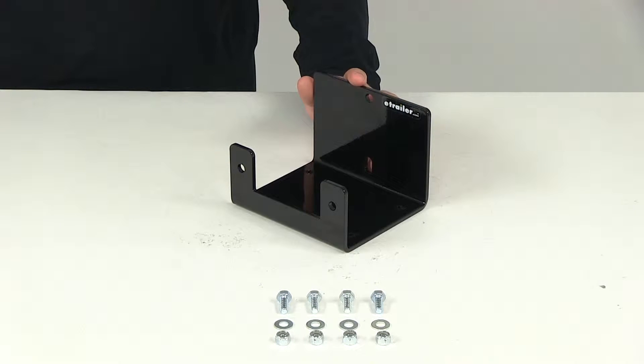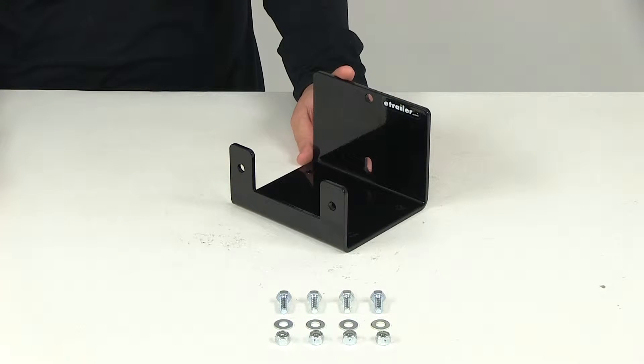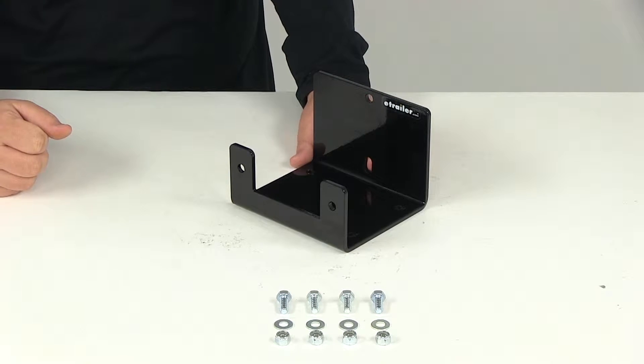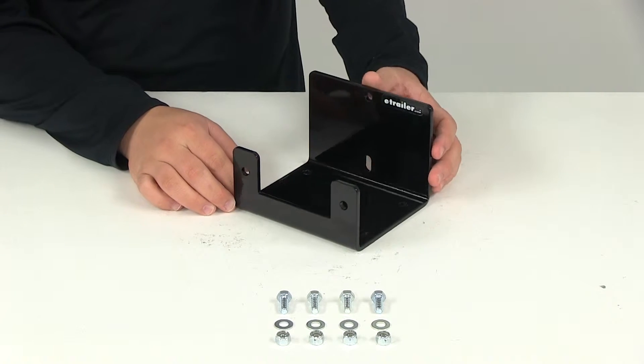Today we're taking a look at part number BDW15177. This is the Bulldog custom fit steel winch mount for the Kawasaki 300 Brute Force. It begins with year 2012.